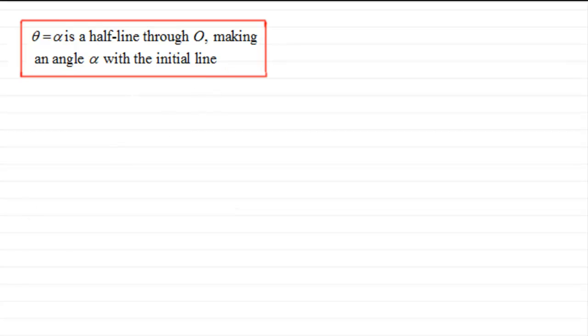In other words, if we had our initial line, let's just draw it in, say something like this. This is theta equaling zero degrees or zero radians. This end here represents the pole, or O.